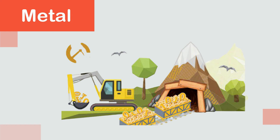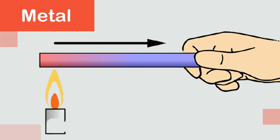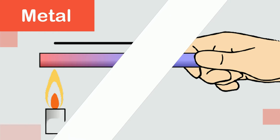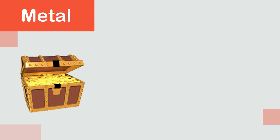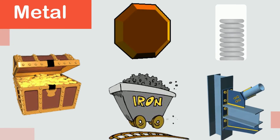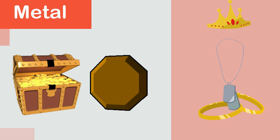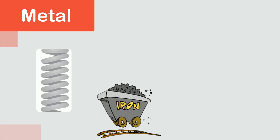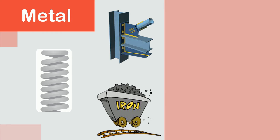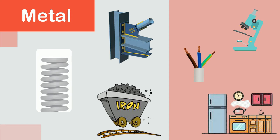Metal: we get metals from underground and mountains. They are usually hard and shiny, but when they are heated they begin to melt. After heating, they can be molded into various shapes. Some common metals are copper, gold, silver, iron, and steel. Metals like gold and silver are often used in making jewelry, while copper, iron, and steel are used to make machines, wires, and kitchen utensils.